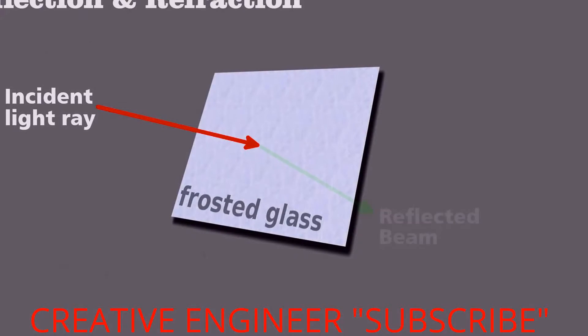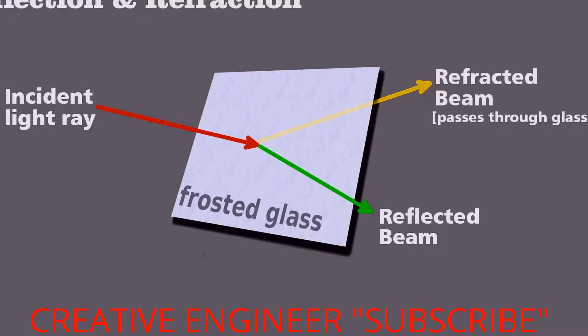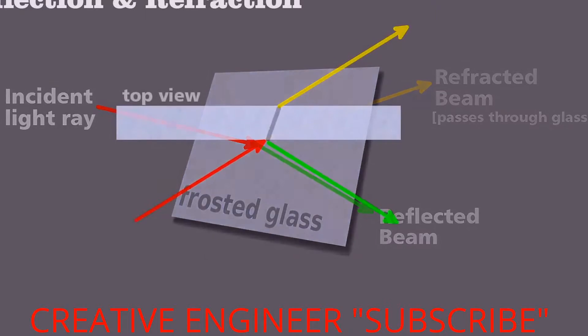Recall that any time light strikes a surface, it can either be absorbed by the material, reflected from it, or pass into and through it. The latter we call refraction. It's easier to see from a top view.